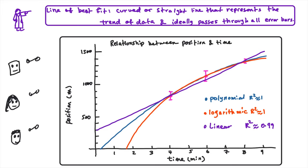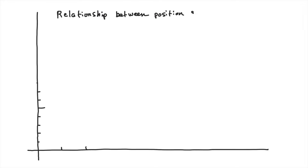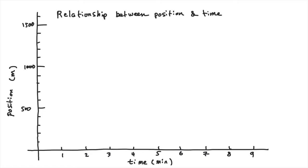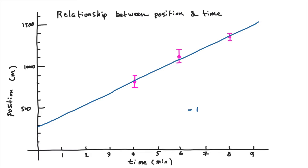Mr. S explained that all three models represent the data well, but with more points a better understanding could be achieved. For this activity, Mr. S asked students to model the data using a linear trend. Using a spreadsheet to draw the line of best fit and using the slope and y-intercept, the group found the equation y = 135x + 283.